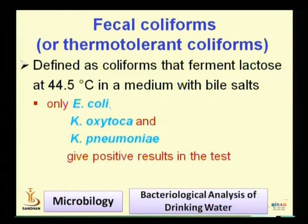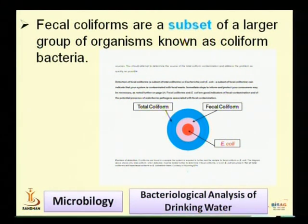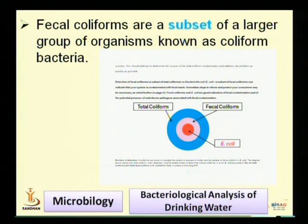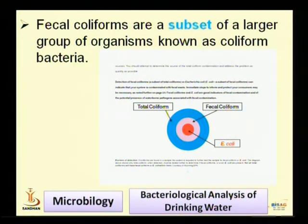Fecal coliforms are those organisms which ferment lactose at a higher temperature, 44.5°C, in a medium with bile salts. These organisms include E. coli, Klebsiella, and Klebsiella pneumoniae. Our search has now narrowed down to fecal coliforms, and among fecal coliforms the most common one is E. coli, because its numbers are also very large in fecal material. Fecal coliforms are a subset of the larger group known as coliform bacteria. As seen in the diagram, the outermost blue circle represents total coliforms, the pink circle represents fecal coliforms, and the center red dot represents E. coli — a subset of fecal coliforms, which is itself a subset of total coliforms.